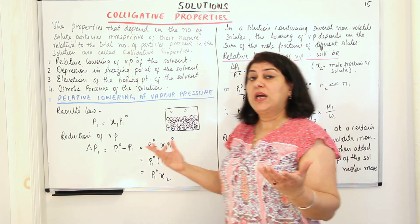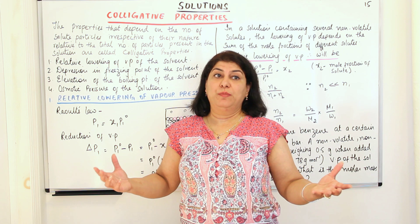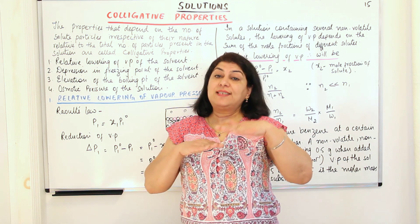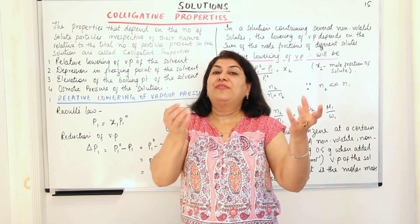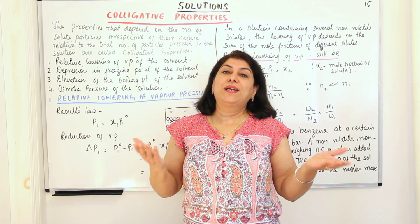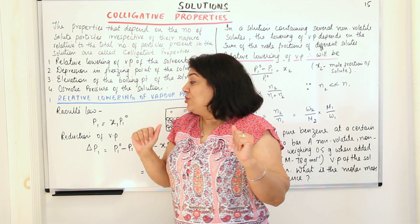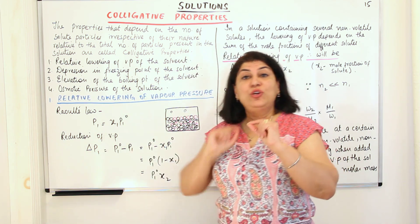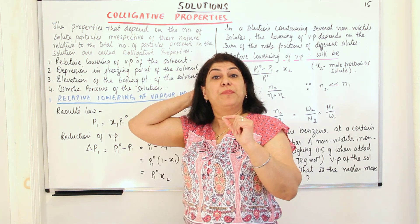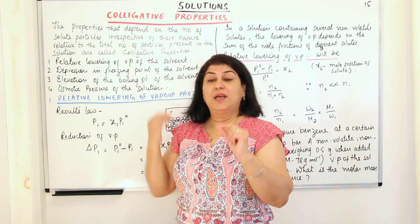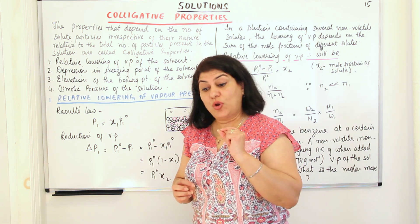Why? Because now the molecules do not have the same surface area available to them, and since evaporation is a surface phenomenon, the molecules from the surface that are coming up are automatically lesser because the surface area is lesser. So the presence of a solute affected the vapor pressure of the solvent.